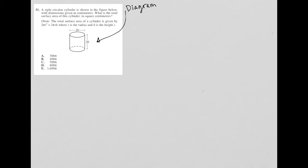This question says a right circular cylinder is shown in the figure below with dimensions given in centimeters. What is the total surface area of this cylinder in square centimeters? What dimensions do we know? We know that the height is 20, so H equals 20 centimeters. We know that the diameter is also 20 centimeters, which means that the radius is 10 centimeters.